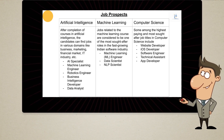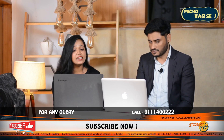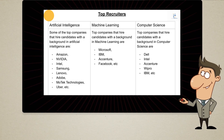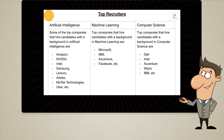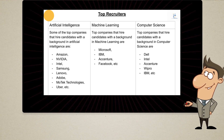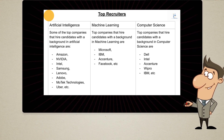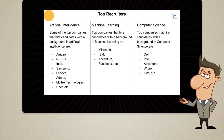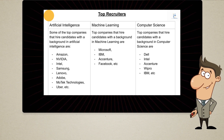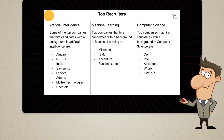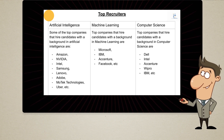For top recruiters in AI, companies like Amazon, Intel, Samsung, Lenovo, Adobe, Microsoft, Uber, and Motec Technologies recruit. For machine learning, similar companies hire, with notable names including Microsoft, IBM, Accenture, and Facebook. For computer science, Google, Facebook, Dell, Intel, Accenture, Wipro, and IBM all hire.